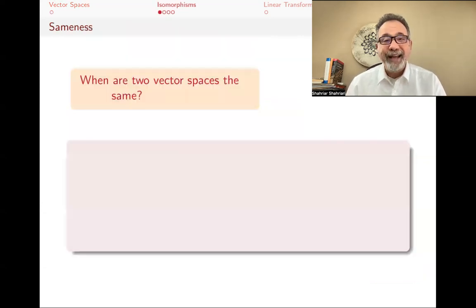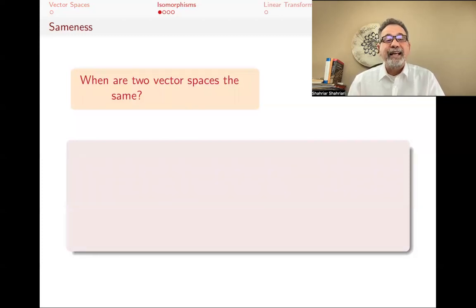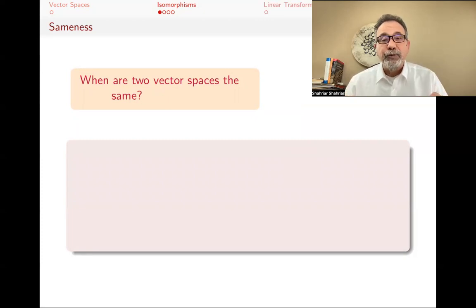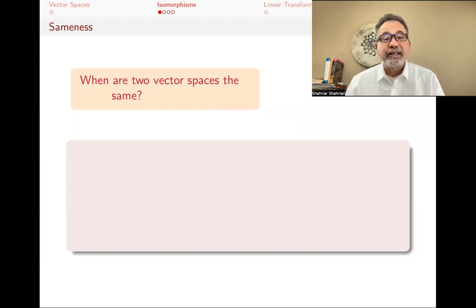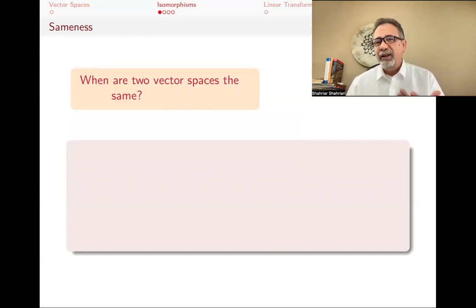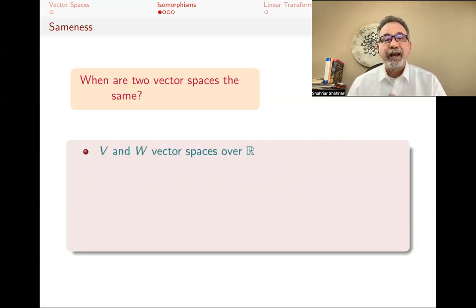Our question today — the motivating question for introducing isomorphisms, and more importantly linear transformations — is: when can we think of two vector spaces as the same? There might be two vector spaces that look different. For example, you might take the elements of one vector space and just keep the same operations and everything, except color every element red. We haven't really changed anything as far as the vector space properties are concerned. We want to know whether vector spaces can come with disguises — maybe two vector spaces walk through the door and we ask, are they really different?